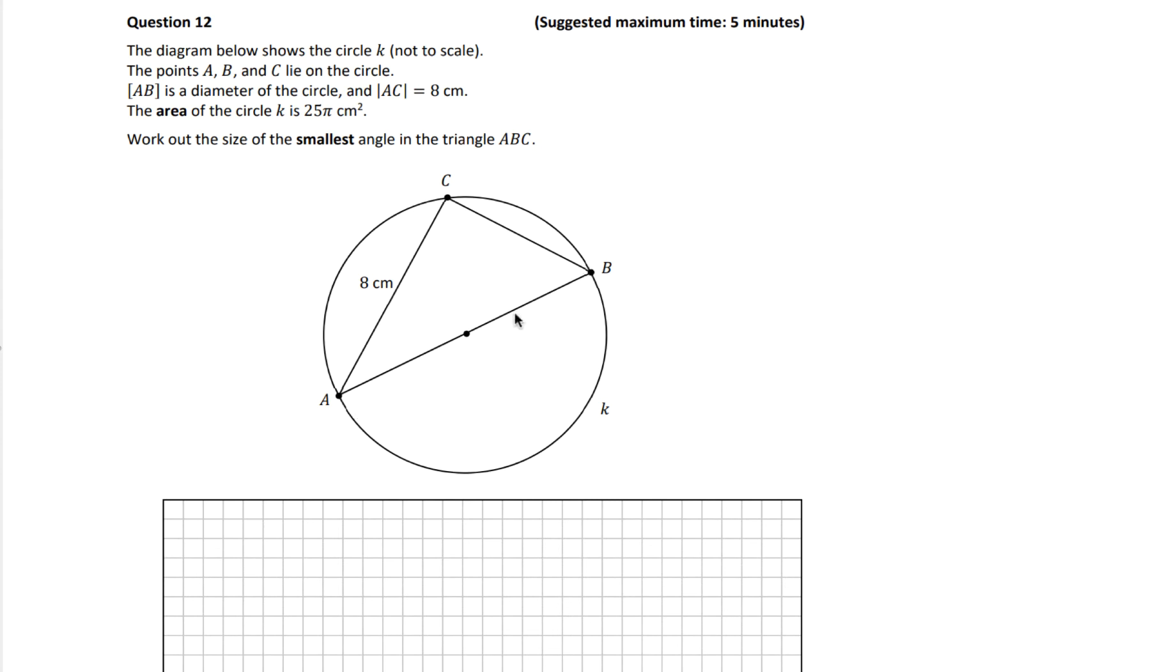This line, and then AC is eight centimeters. So that's all the information on the diagram. The area of the circle K is 25π centimeters squared. Work out the smallest angle in the triangle ABC. Okay, so let's start with that.